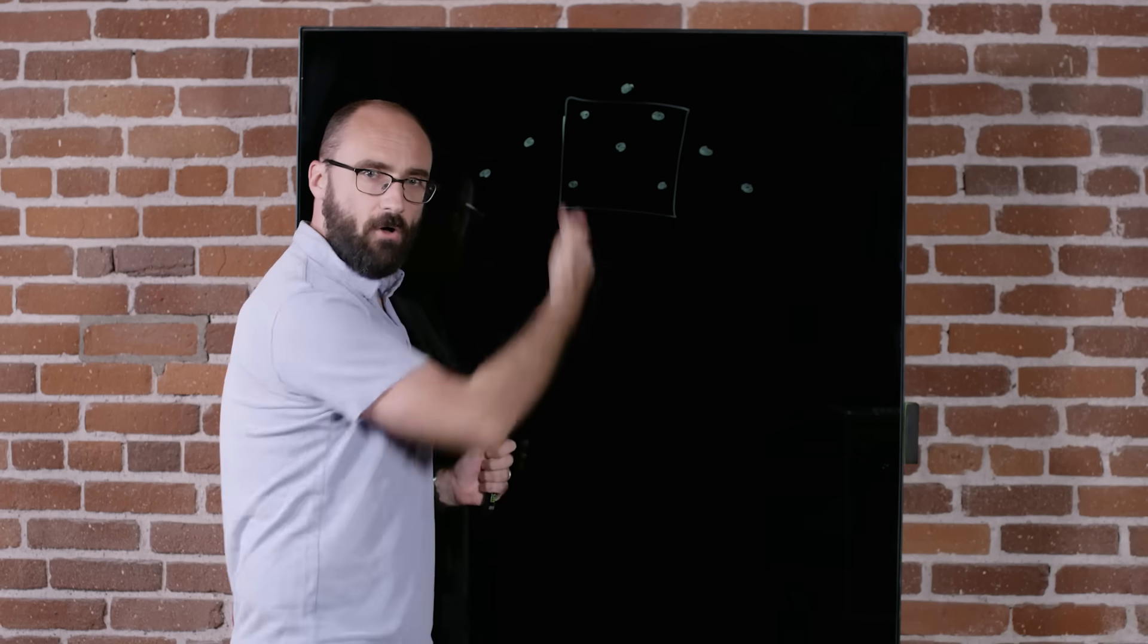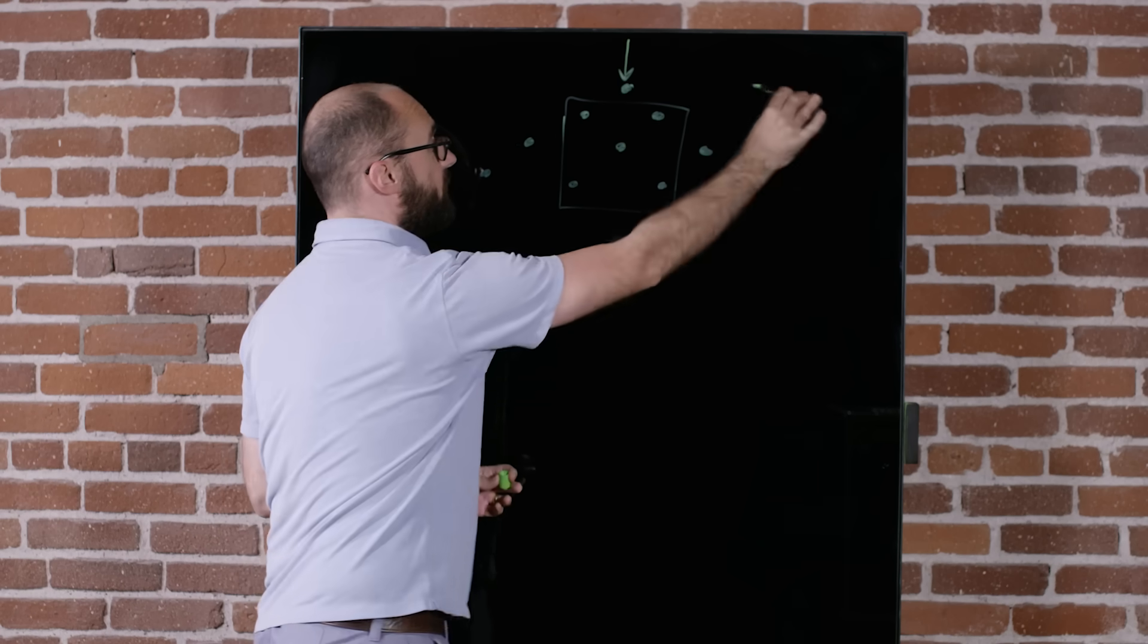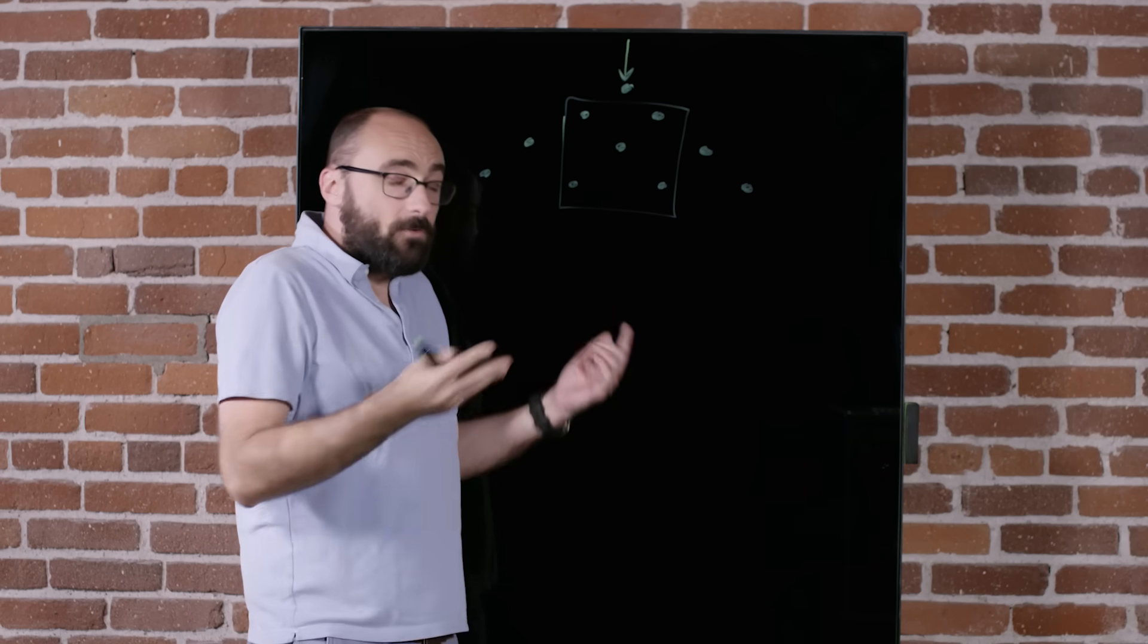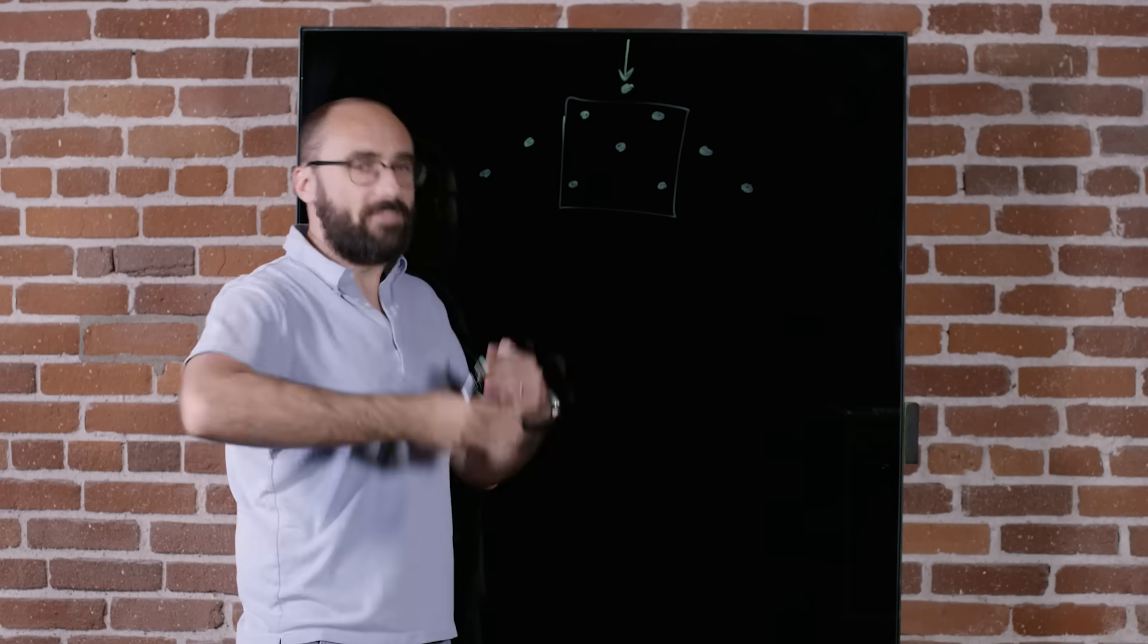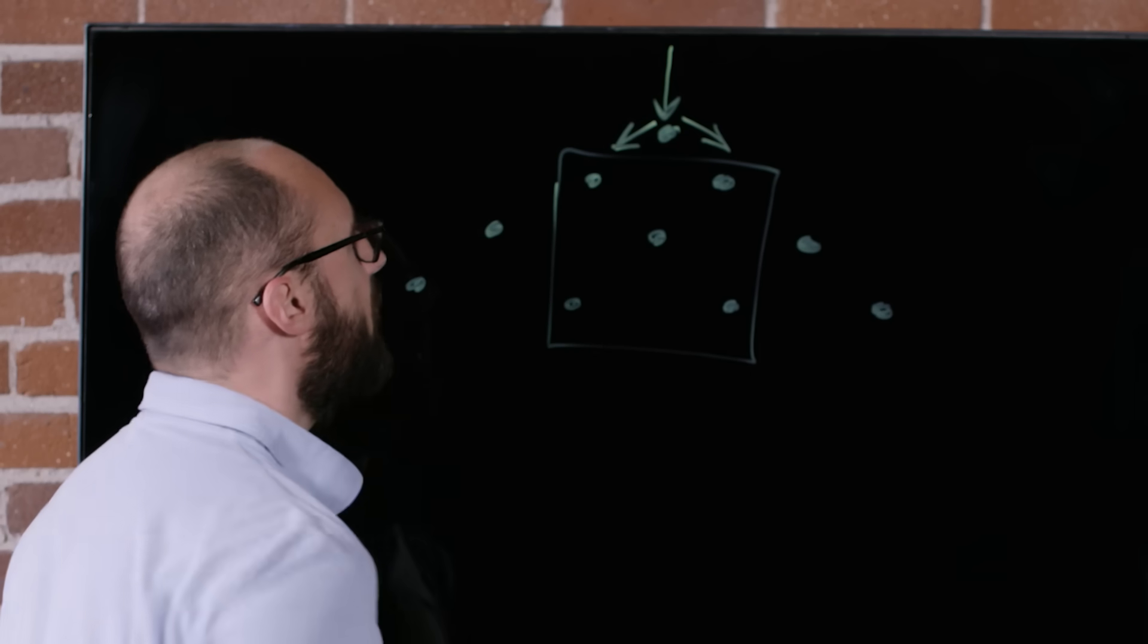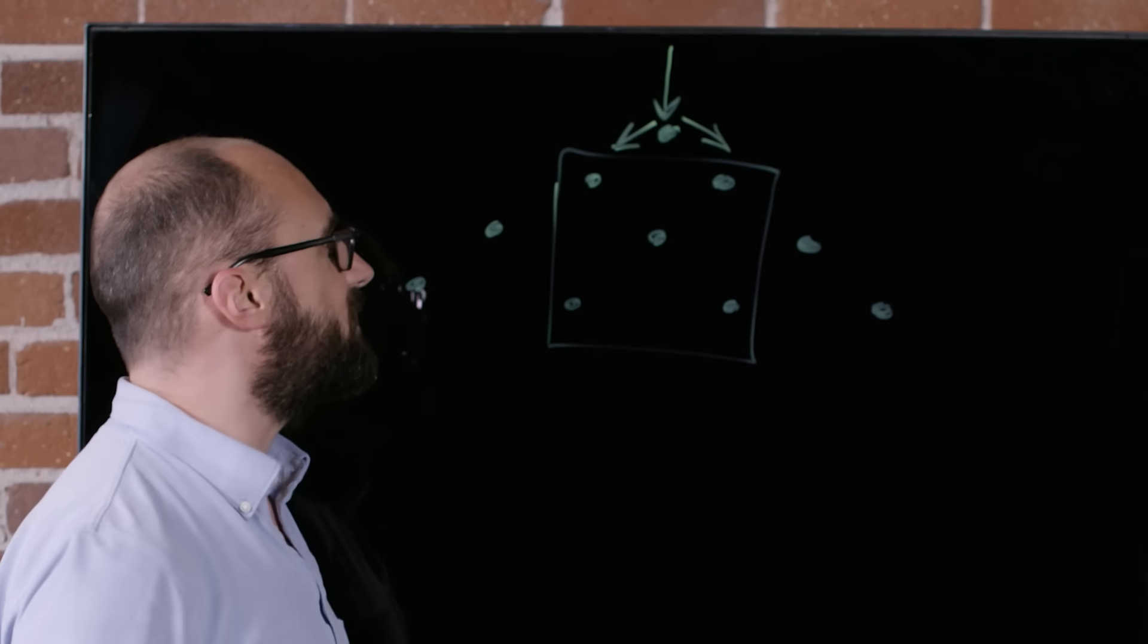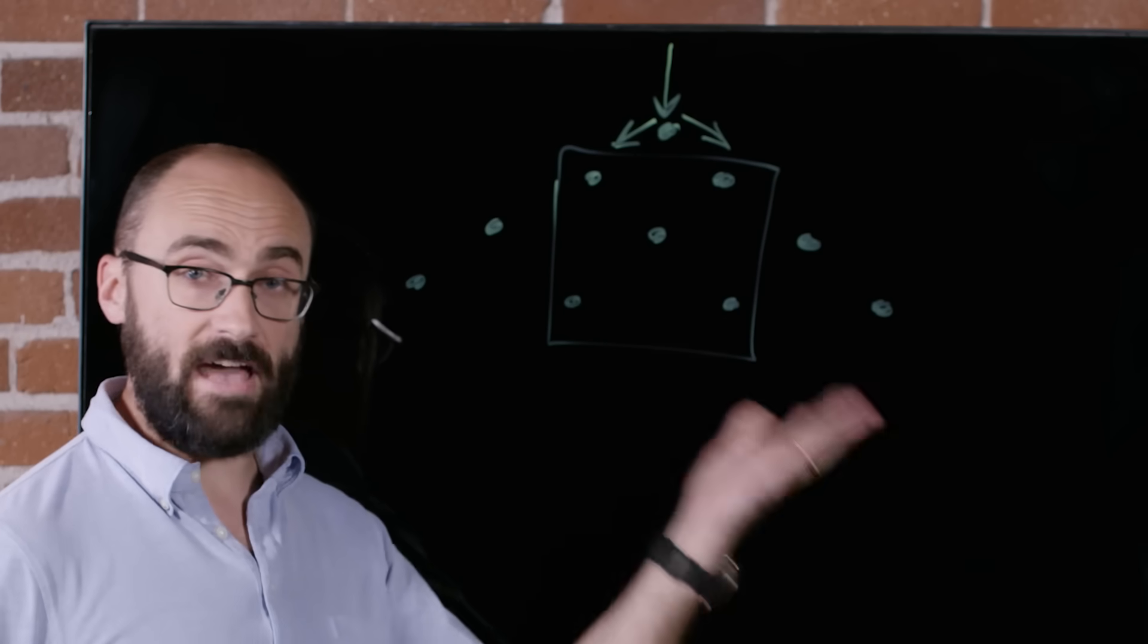When the balls fall through the machine, they first reach peg number one in the first row. And once they do that, they have a choice. Well, they don't really have a choice but they will either go left or right. And because of the way the Galton board is designed, there's about a 50-50 chance that any given ball will go to the left or right.